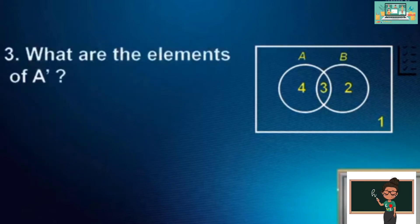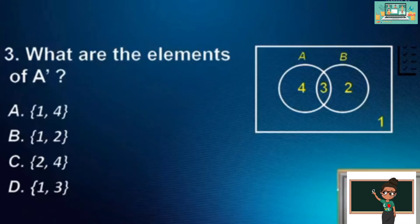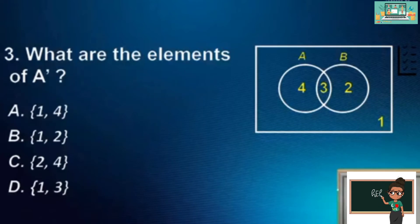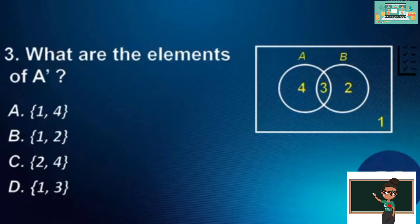Number 3. What are the elements of A complement? A. {1 and 4}. B. {1 and 2}. C. {2 and 4}. D. {1 and 3}. The answer is B.